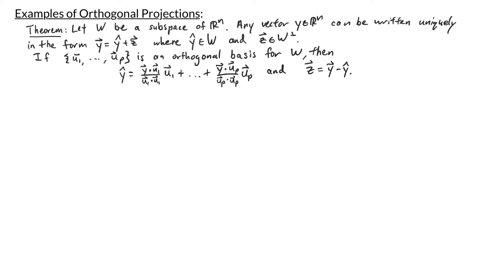Let w be a subspace of R^n. Any vector y in R^n can be written uniquely in the form y equals y-hat plus z, where y-hat is in w and z is in w-perp. If u1 through up is an orthogonal basis for w, then y-hat equals the sum of (y·u1 / u1·u1) times u1 through (y·up / up·up) times up, and z can be found by taking y and subtracting y-hat.